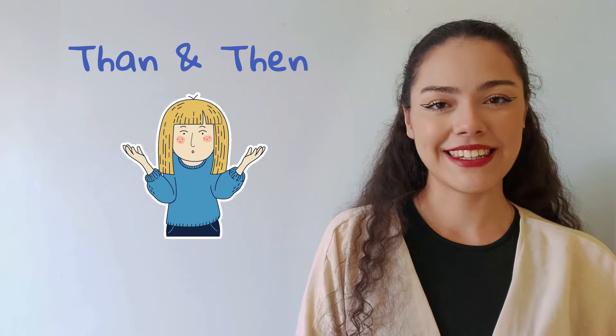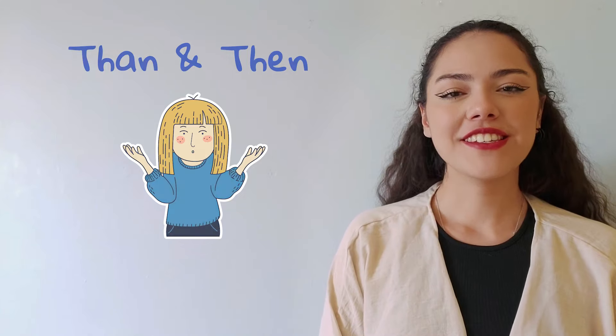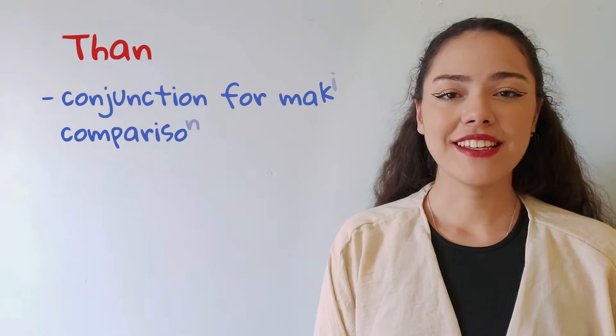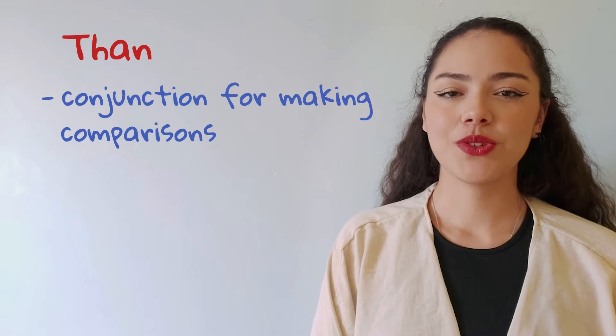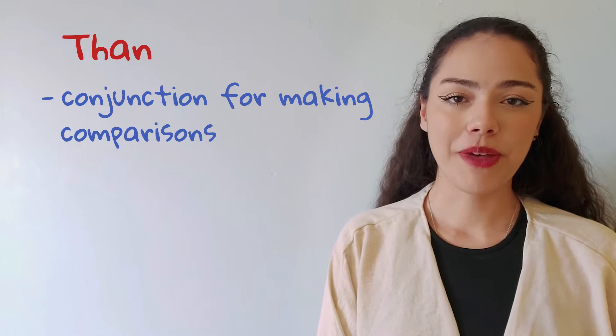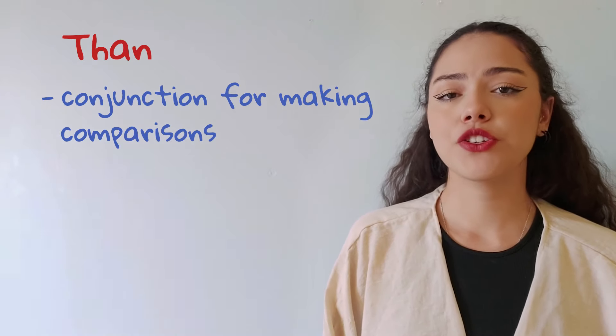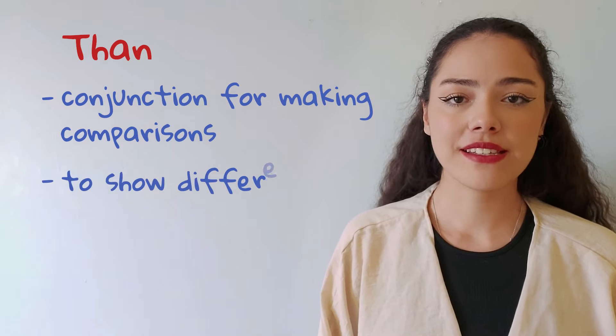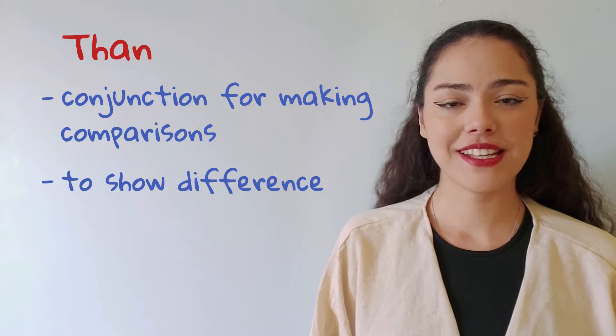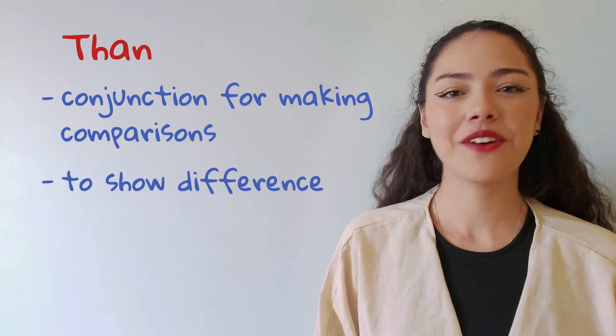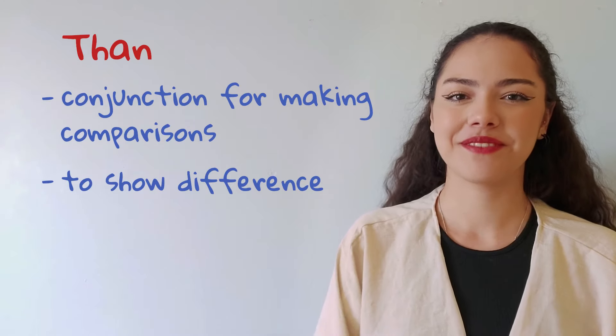Than and then. First let's talk about than. Than is a conjunction used for making comparisons. When you want to compare two or more things, you use it to show the difference in some quality or quantity.